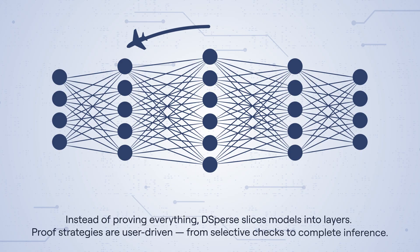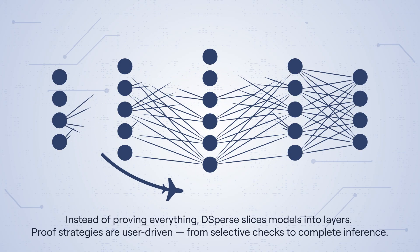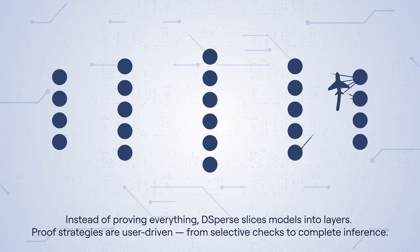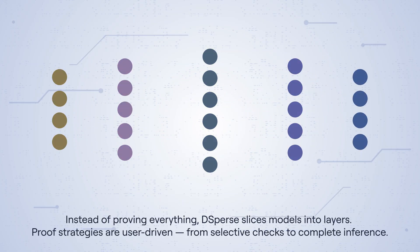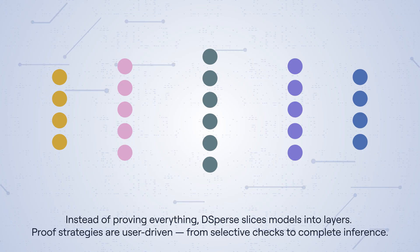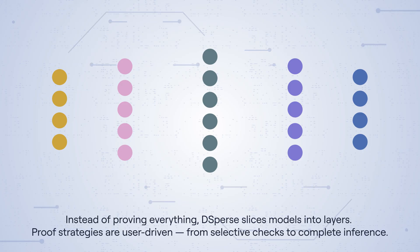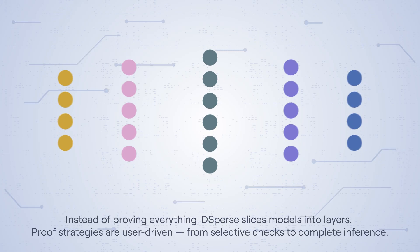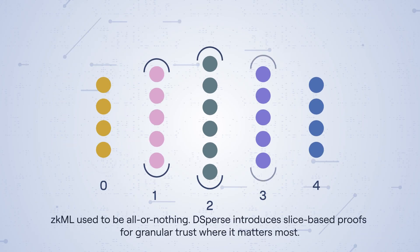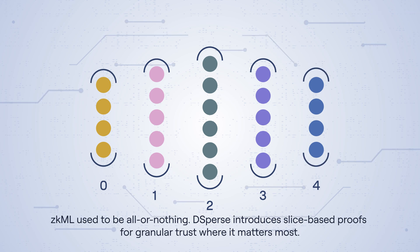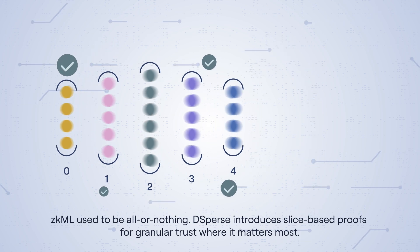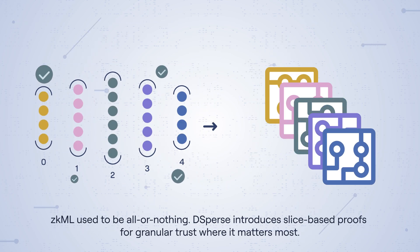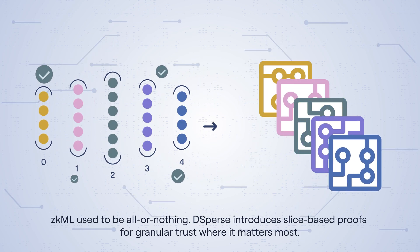Instead of proving everything, D-Sperse slices models into layers. Proof strategies are user-driven, from selective checks to complete inference. ZKML used to be all or nothing. D-Sperse introduces slice-based proofs for granular trust where it matters most.